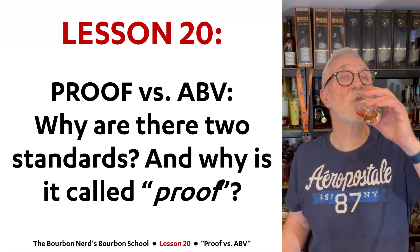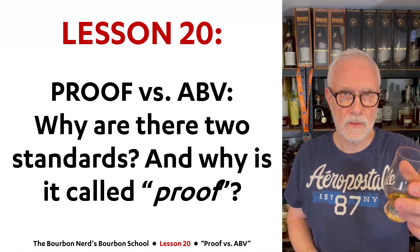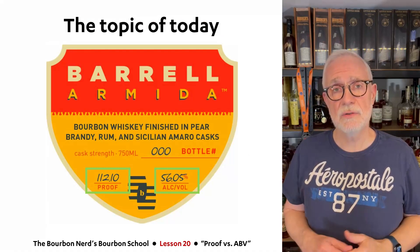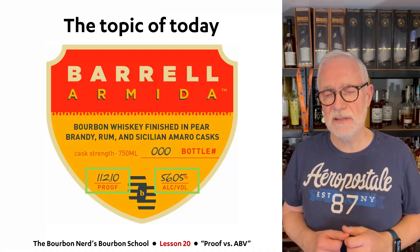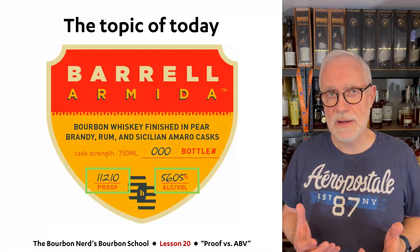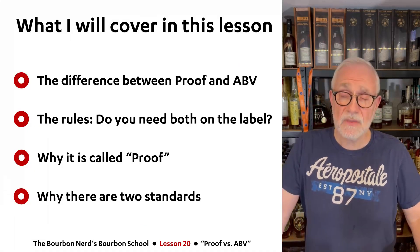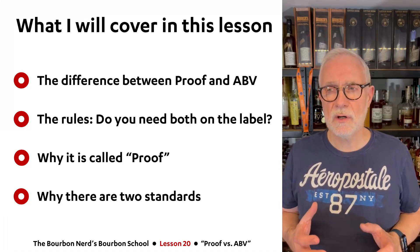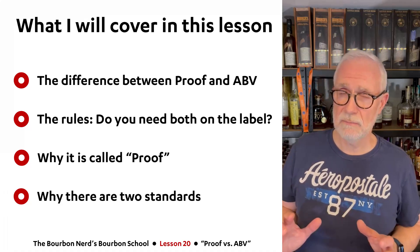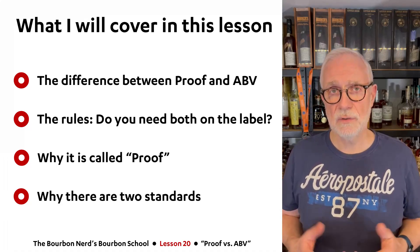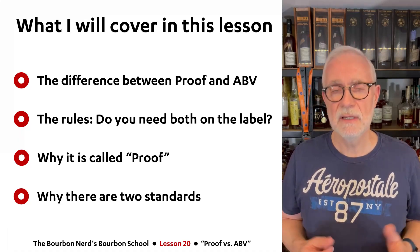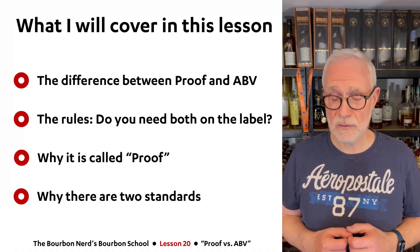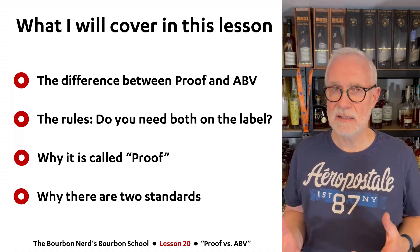So cheers you all, and thank you so much for watching. The topic of today — as you can see on the label here — there are actually two ways to measure alcohol. One says proof and the other one says ABV. What I'll be covering today is firstly the difference between proof and ABV. I'm also going to go into a little bit of the rules: do you really have to put both on the label or just one of them? And I'll dig into the word proof, because ABV stands for alcohol by volume — the name indicates what that is — but why the word proof is associated with alcohol content, I'll tell you about as well. And also why there are actually not just one standard, but two standards.